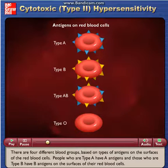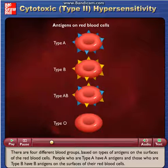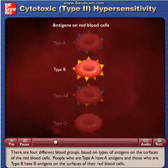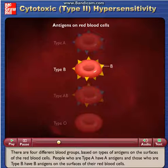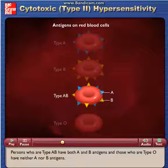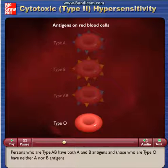There are four different blood groups, based on types of antigens on the surfaces of the red blood cells. People who are type A have A antigens, and those who are type B have B antigens on the surfaces of their red blood cells. Persons who are type AB have both A and B antigens, and those who are type O have neither A nor B antigens.